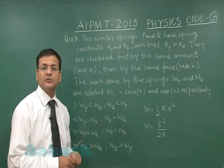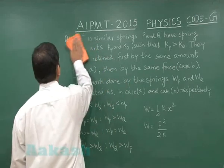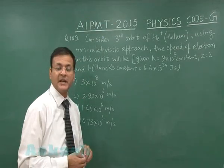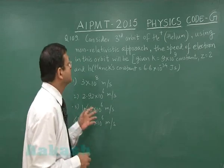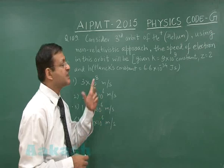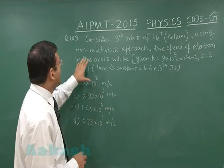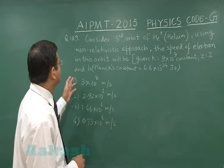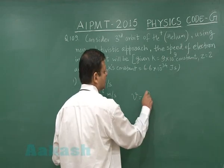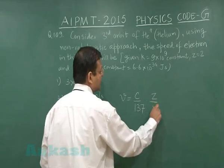Now let us switch over to question 109. This question is based on Bohr's model of hydrogen atom. It says consider the third orbit of helium plus, that means a single electron will be there and you can apply Bohr's model using a non-relativistic approach. The speed of electron in this orbit will be...